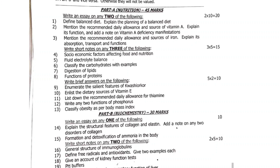Third question: mention the recommended daily allowances and sources of iron, explain its absorption, transport and functions. Next, short notes — out of five, answer any three, five marks each. Fourth question: socioeconomic factors affecting food and nutrition. Fifth question: fluid electrolyte balance. Sixth question: classify carbohydrates with examples. Seventh question: digestion of lipids. Eighth question: functions of proteins. Brief answers — five questions, 5 into 2 equals 10 marks. Ninth question: enumerate the salient features of kwashiorkor. Tenth question: enlist the dietary sources of vitamin E. Eleventh question: list down the recommended daily allowances for thiamine. Twelfth question: write any two functions of phosphorus. Thirteenth question: classify obesity as per body mass index.